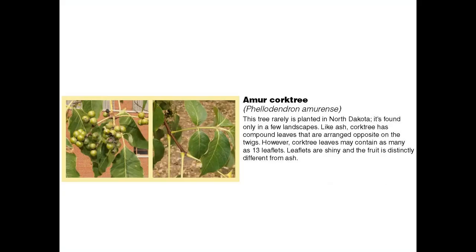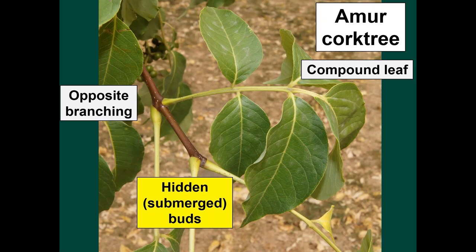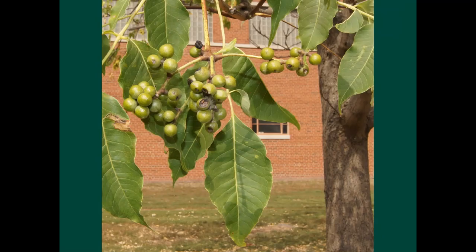Amur cork tree is another species that could potentially be confused with green ash, though it's pretty uncommon in North Dakota. Amur cork tree also has compound leaves that are opposite from each other. However, the buds are completely hidden at the base of the leaf — the only way to see the buds is to remove the leaf. On ash trees, the buds are visible even during the growing season. Also, the fruit of Amur cork tree is completely different from that of ash trees.